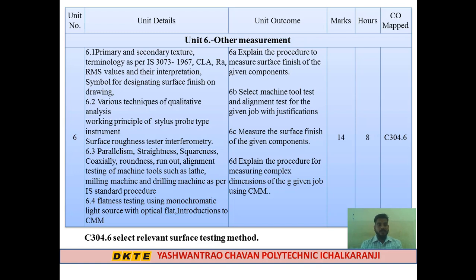Topic 6.4 is Flatness Testing using a Monochromatic Light Source — a simple yet precise method. If a component is flat, the difference is low and smooth, and we can check using this method. The last topic is an introduction to CMM — Coordinate Measuring Machine.